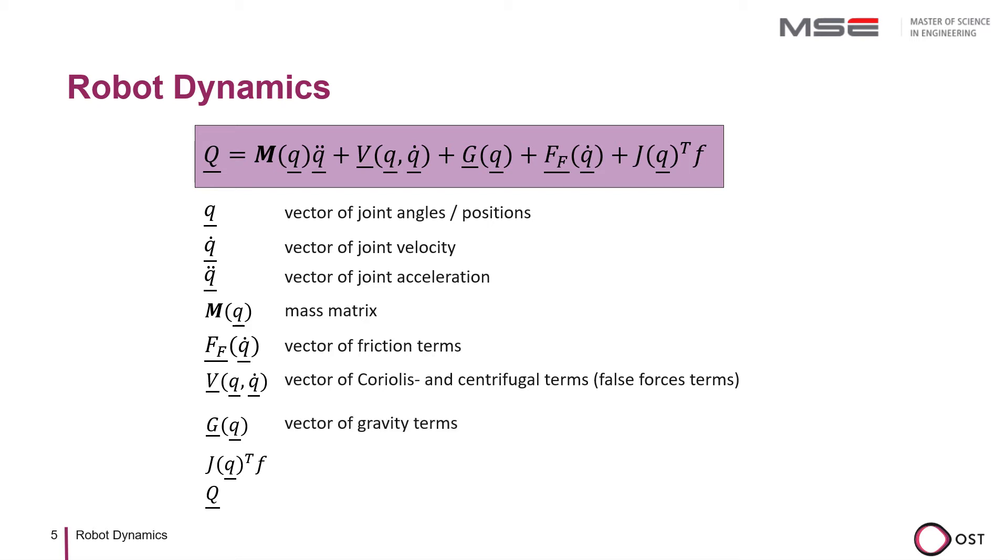This term is therefore dependent on the generalized robot positions and velocities. The gravitational term describes the influence of gravity and depends on the position Q of the robot.